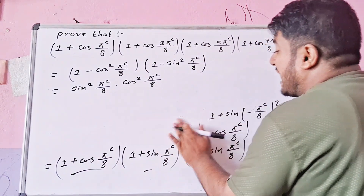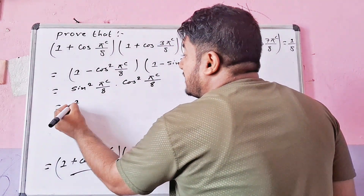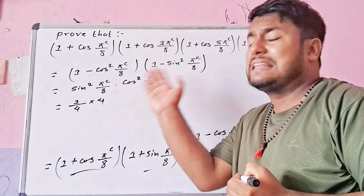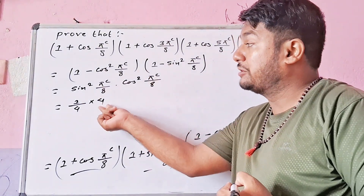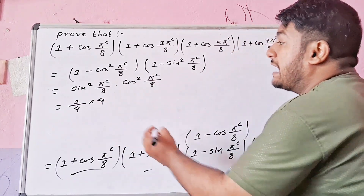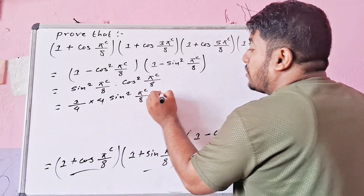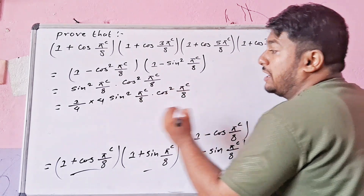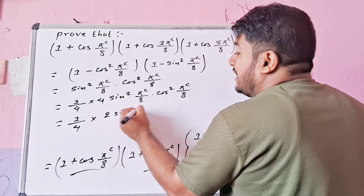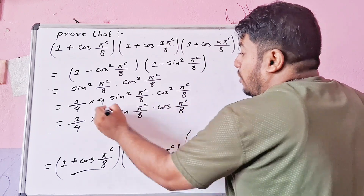This simplifies to 1/4 into (2 sin(π/8) into cos(π/8)) whole squared, using the factored form. We write 1/4 into (2 sin(π/8) cos(π/8))².